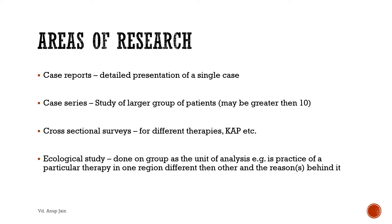Then there can be various cross-sectional surveys, for example for observation of different therapies — how they are being performed in one section or one part of the country and how they are being performed in another part. There can also be knowledge, aptitude and practice studies wherein we seek the literature behind the therapies from the different Samhitas and then assess whether the same knowledge is being practiced in the Vaidya or Ayurveda community.